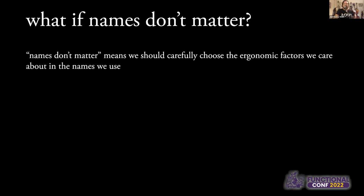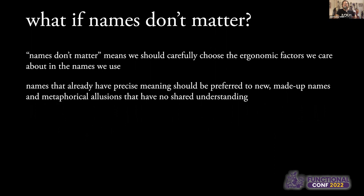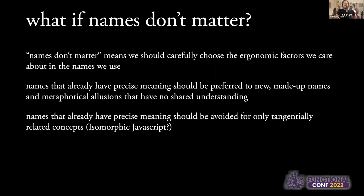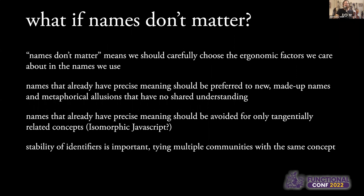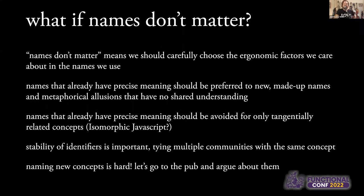If names don't matter, does this mean we're free to rename anything to any silly name? No, of course not. It really means that the specific word chosen isn't the important factor — it means changing well-understood existing names doesn't necessarily help. Basically we should choose the ergonomic factors we care about in the names we use. Names that already have a precise meaning should be preferred to new made-up names. Names that already have a precise meaning should be avoided for only tangentially related concepts, because 'isomorphic JavaScript' has got nothing to do with isomorphism. And stability of identifiers is important — it can tie multiple communities with the same concept. Naming new concepts is hard, so let's go to the pub and argue about them.